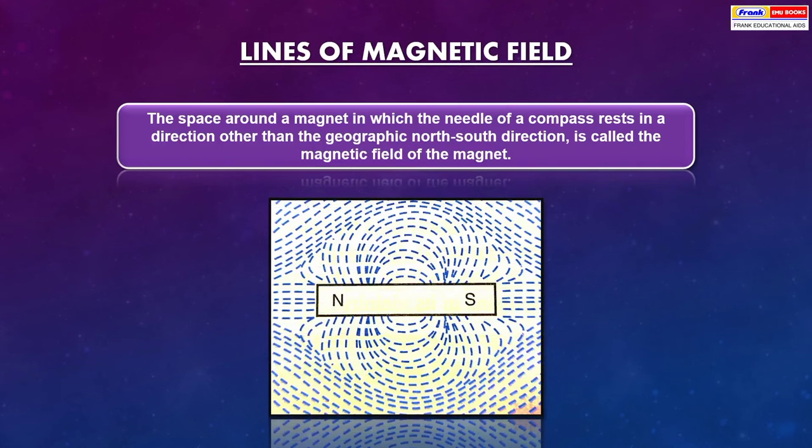Lines of magnetic field. The space around a magnet in which the needle of a compass rests in a direction other than the geographic north-south direction is called the magnetic field of the magnet.